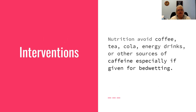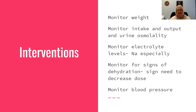Some interventions. The first thing we need to tell them is to avoid coffee, tea, cola, energy drinks, and anything else that has caffeine in it — especially if we're giving it for bedwetting. They need to monitor their weight. Remember, fluid gain in the body will add weight, so we monitor weight. We do I&O and the urine osmolality. We monitor the electrolyte levels, especially the sodium. We monitor for signs of dehydration because if they aren't getting enough of the hormone, they will become dehydrated from all the polyuria they're doing.